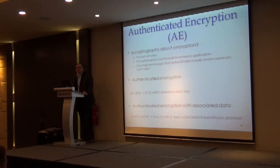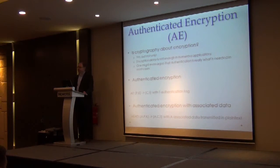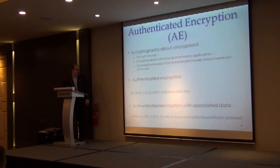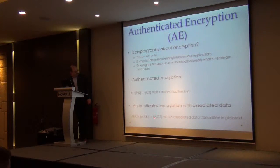When you speak about authentication encryption, it's basically a function which takes plaintext and a key, and gives back the ciphertext and a tag T, which is the authentication mark. You can also have an additional kind of data — authentication encryption with additional data (AEAD). The associated data A is transmitted in plaintext, and A also appears in the output of the authentication encryption.